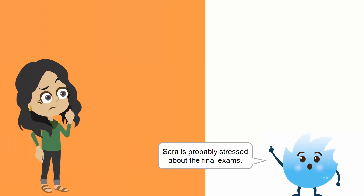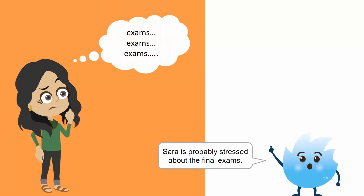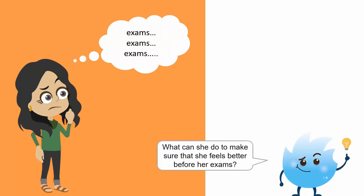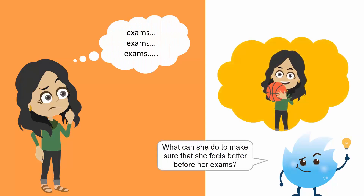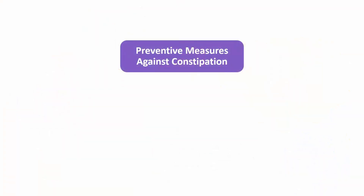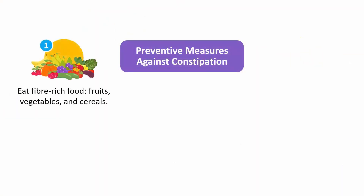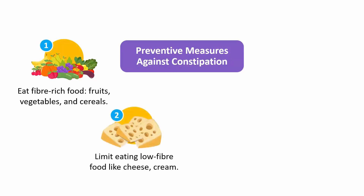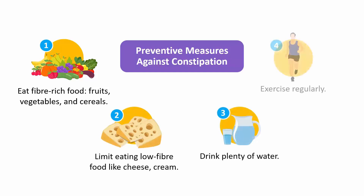Sara is probably stressed about the final exams. What can she do to make sure that she feels better before her exams? Here are some of the measures we can take to prevent constipation: Eat fiber-rich food like fruits, vegetables, and cereals. Limit eating low-fiber food like cheese and cream. Drink plenty of water. Exercise regularly.